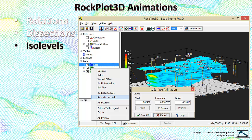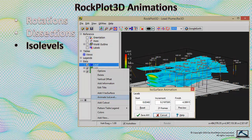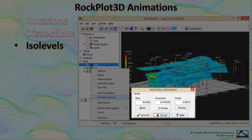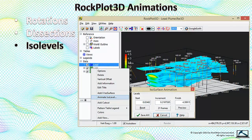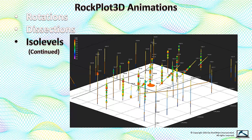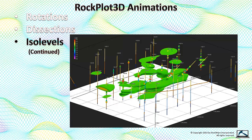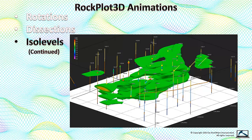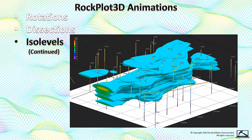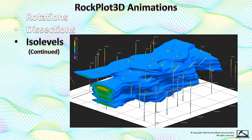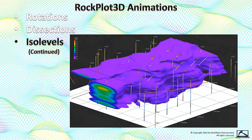The ISO, or cutoff levels within a block model, can be shown at various levels by right-clicking on the model within the RockPlot 3D data tree and selecting the Animate ISO Level option. You will then be prompted to specify the initial ISO level value, the ISO level increments, and the final ISO level value. The output can be just as dramatic as the dissections, but it can be very misleading in that some viewers might think it's showing some sort of migration or movement. It isn't. An ISO level movie only shows relative concentrations within a static model.